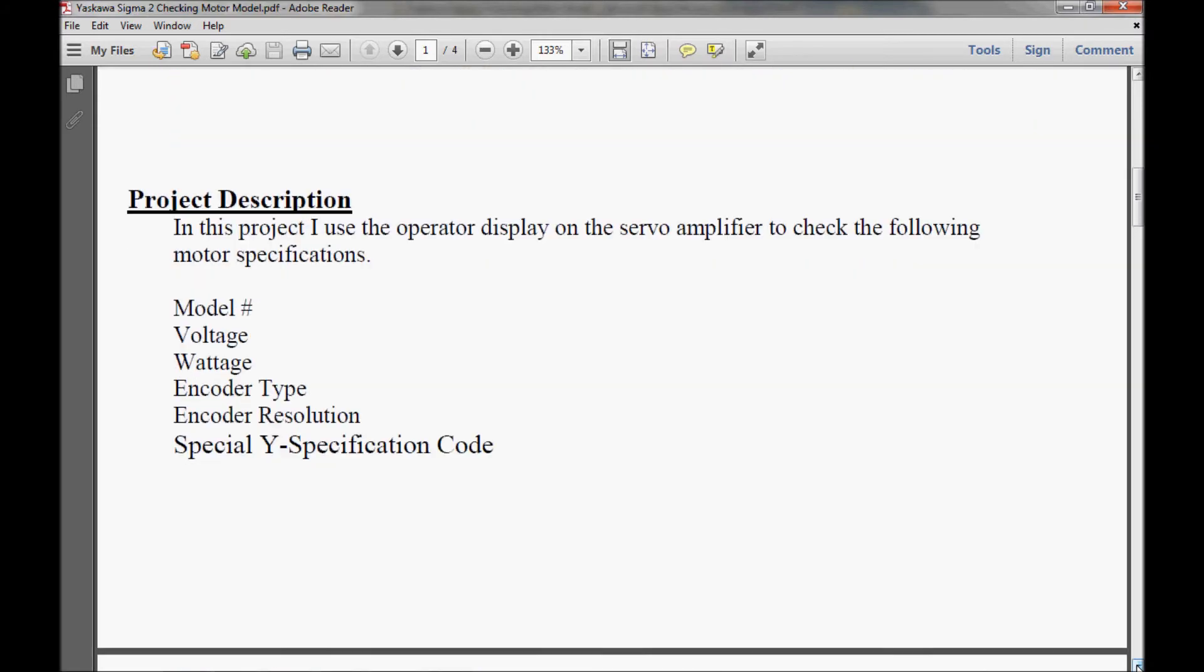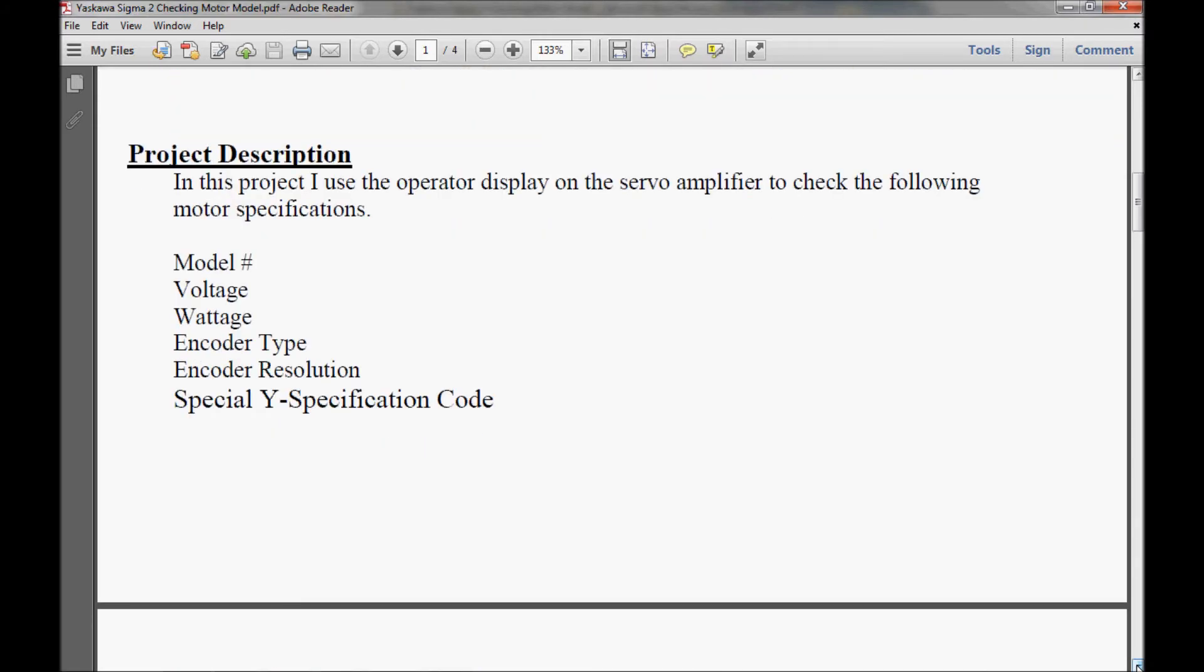I'm going to scroll down and show you the project description for today's project. In today's video, I am going to be using the operator display to display the motor's model number, the voltage, the wattage, the encoder type and encoder resolution, and also the special Y specification code of the motor.